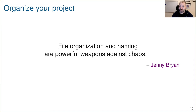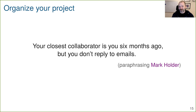The first step in trying to make your work more reproducible is to organize your project. Jenny Bryan, a statistician in Vancouver, wrote that file organization and naming are powerful weapons against chaos. Your closest collaborator is you six months ago — but you don't reply to emails. When you come back to a project six months later, the only messages you have for yourself are the ones you left there. What have you done with a project that allows you, six months later, to make sense of where you were and what all the files are?